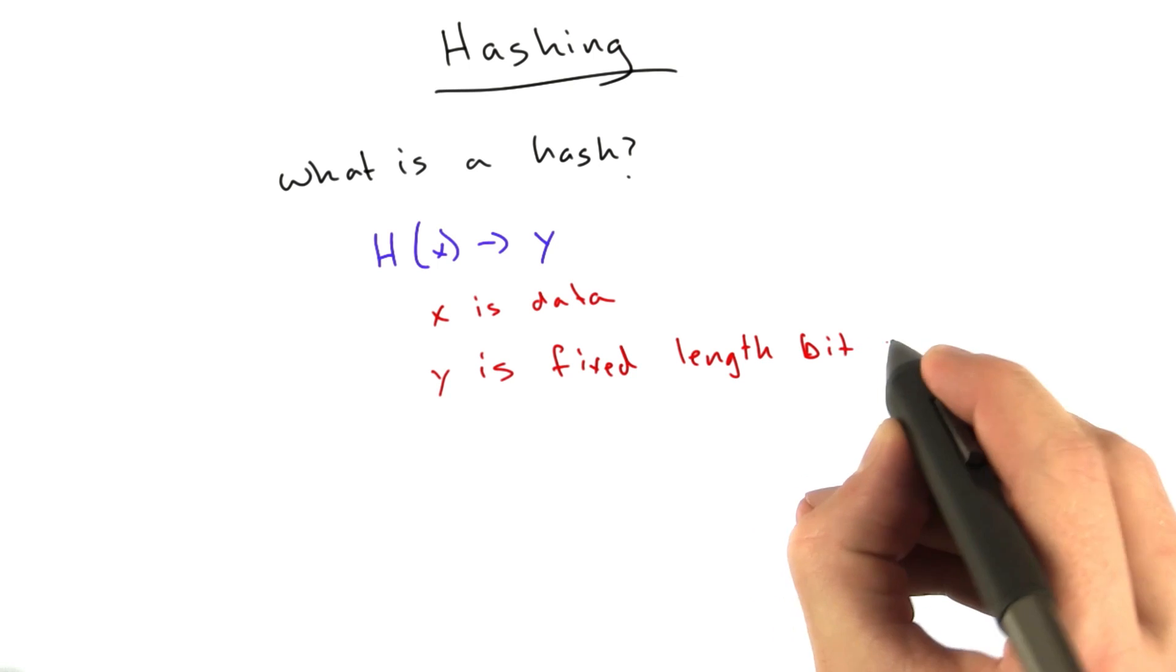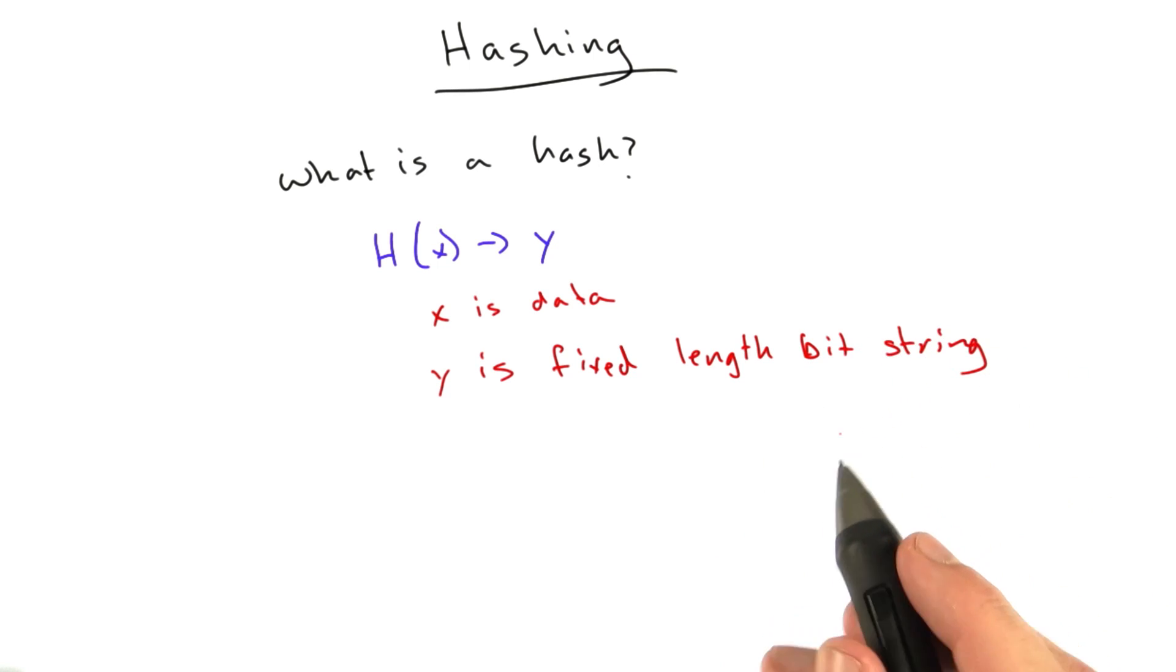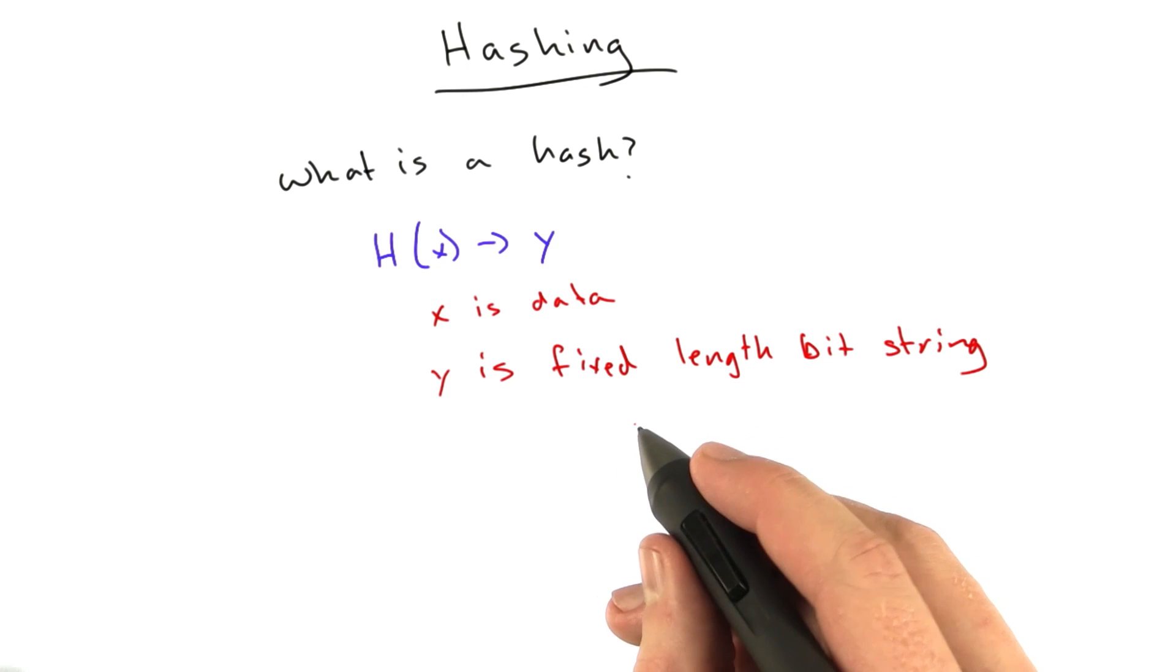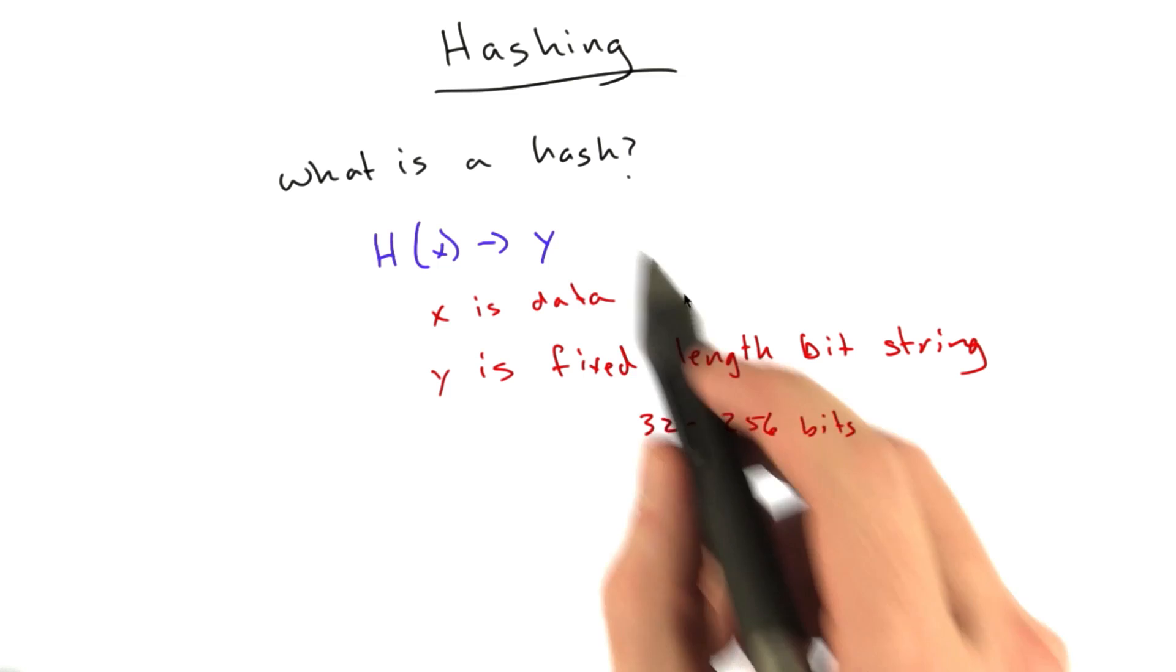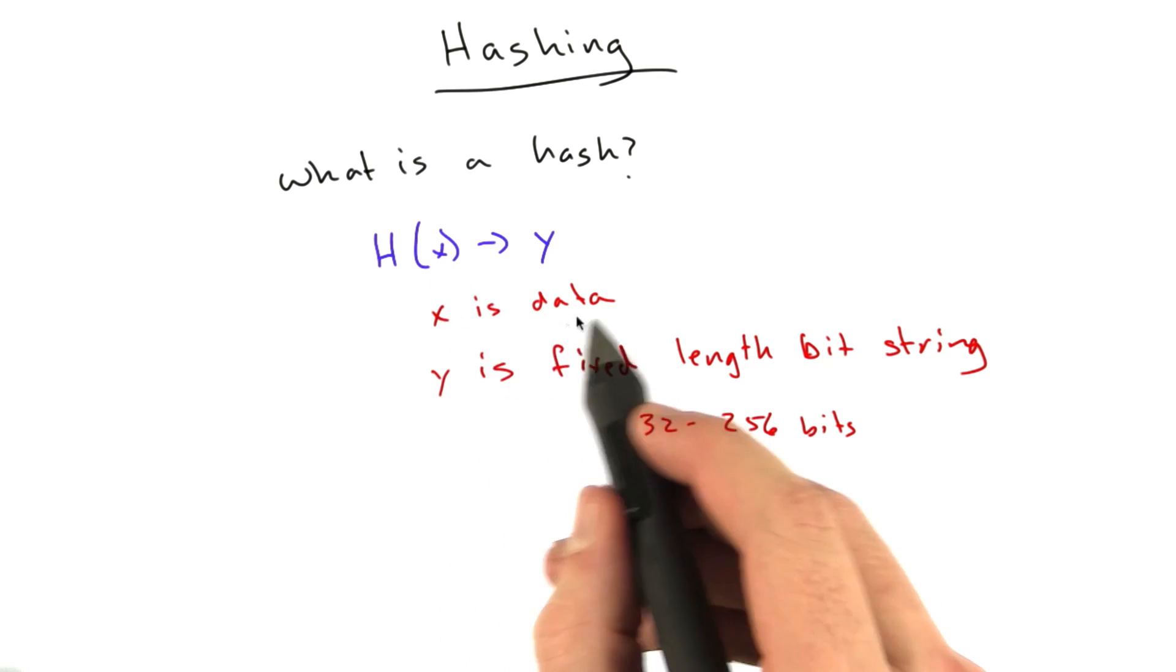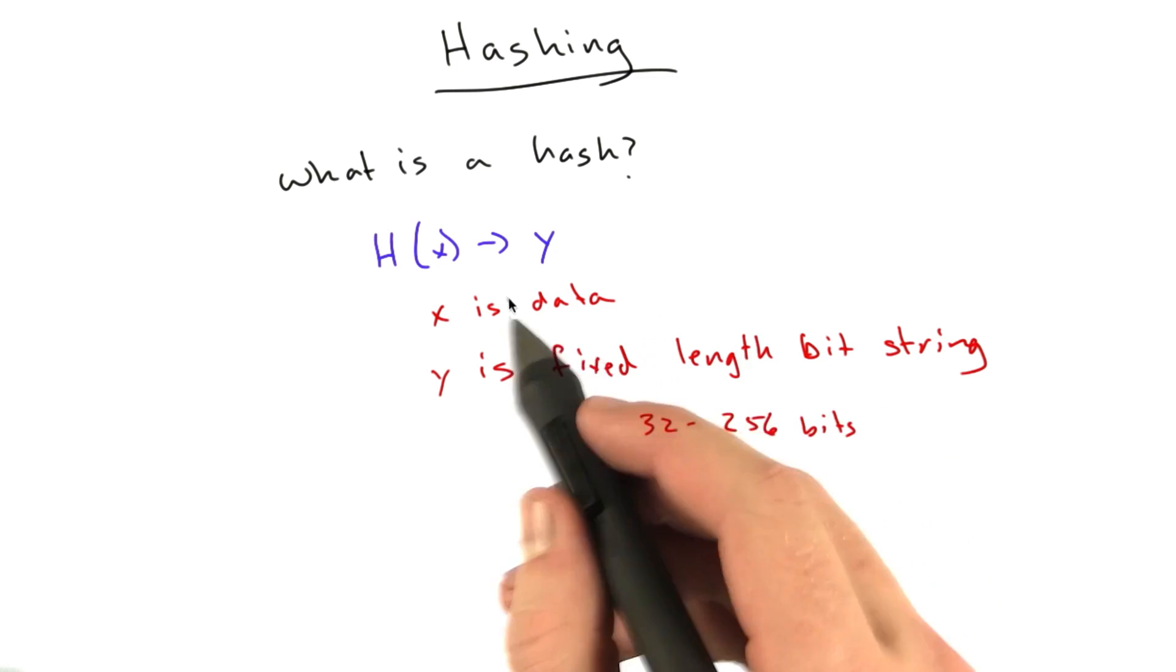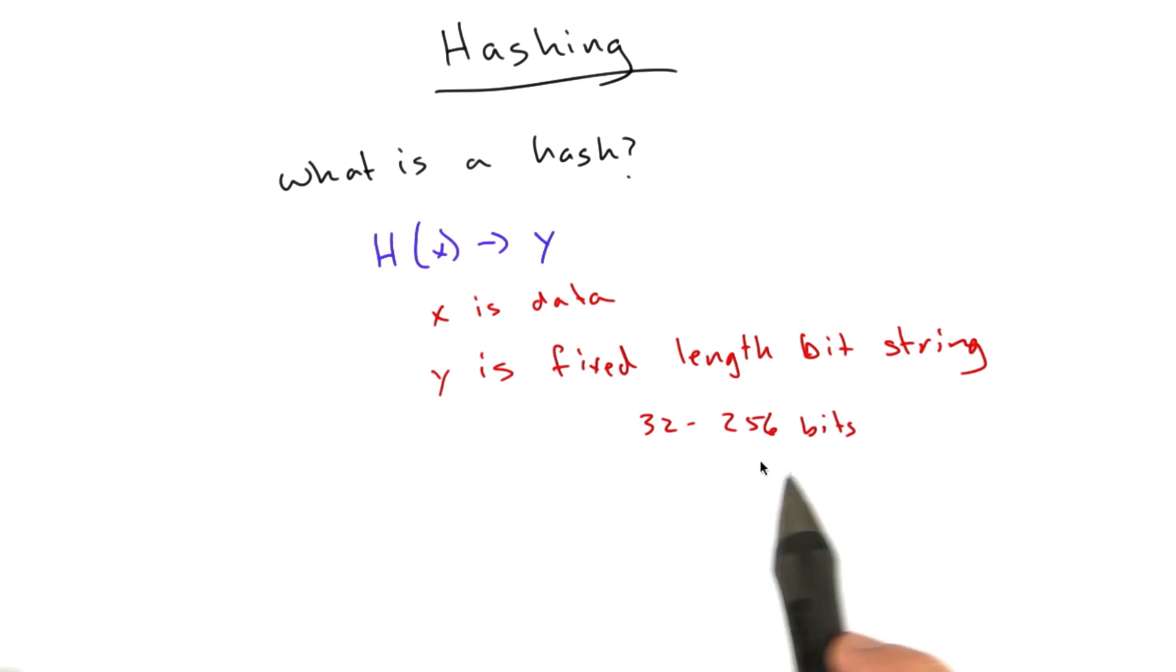which is a fixed length bit string. Usually, depending on the algorithm, 32 to 256 bits are the algorithms we'll be dealing with. It can be arbitrarily length, but the common functions we'll be dealing with basically take x, data x of any size, some big long bit string, and returns a value y that is fixed length.